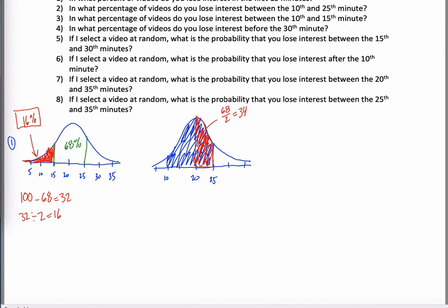And the stuff in blue, well, same logic. If it went from 10 to 30, it would be 95%. But it doesn't go from 10 to 30. It only does half of that from 10 to 20. So half of 95%. 95 over 2 is 47.5%. And that's this area.